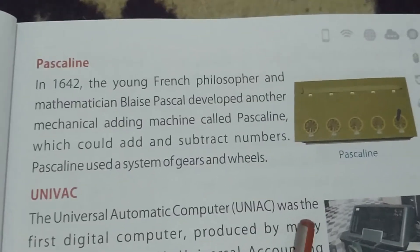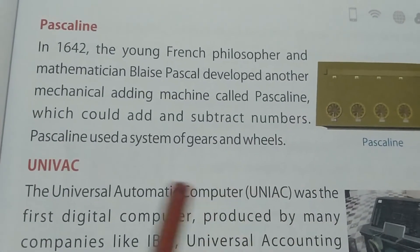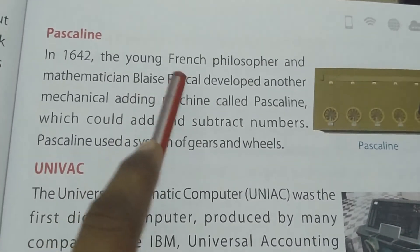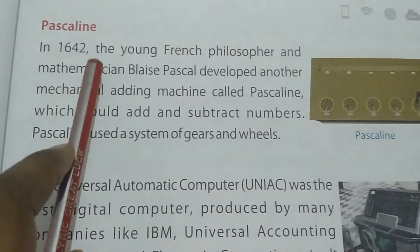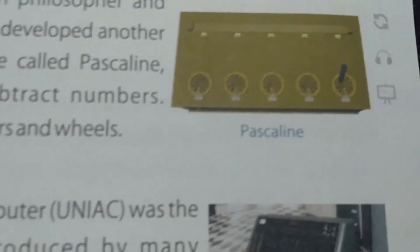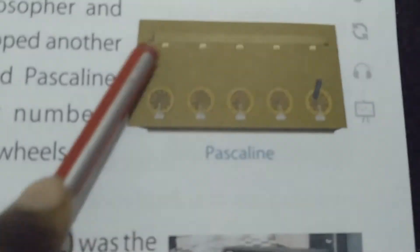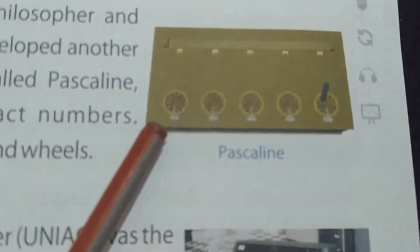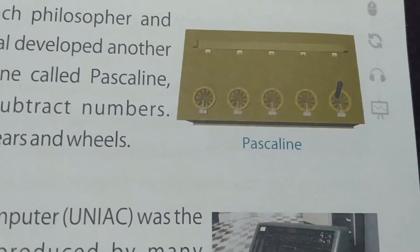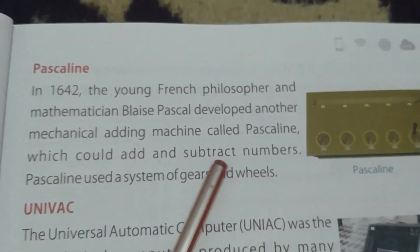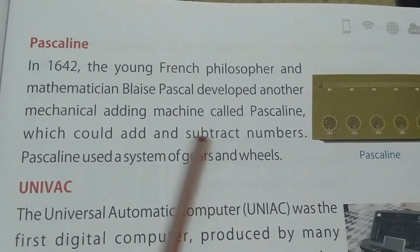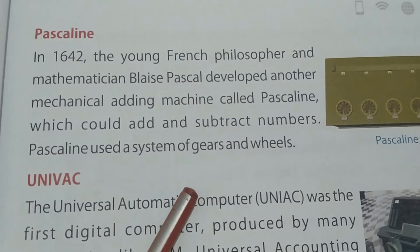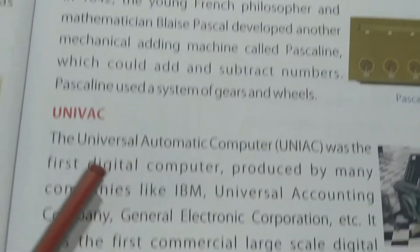The Pascaline was developed by Blaise Pascal, a French philosopher and mathematician, in 1642. As you can see in the picture, the Pascaline consists of wheels and gears — wheels meaning circular wheel-like components. The Pascaline is used for addition and subtraction.